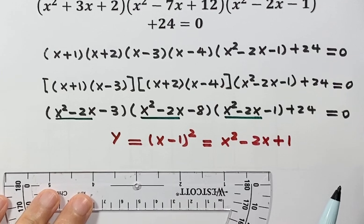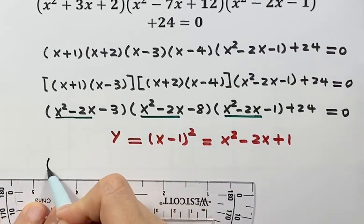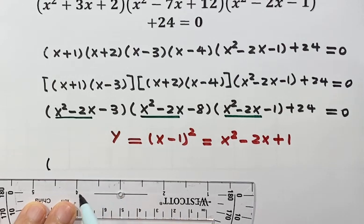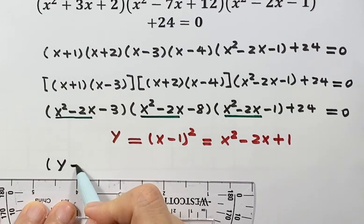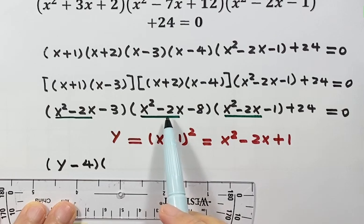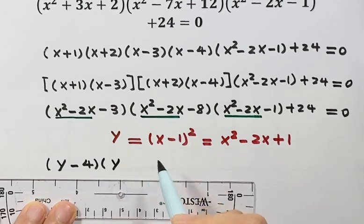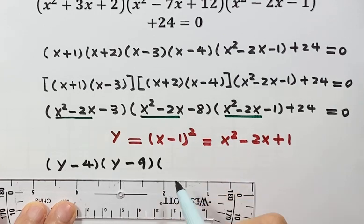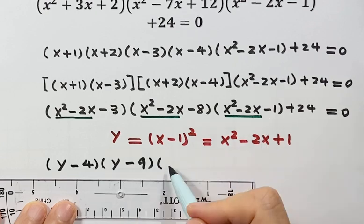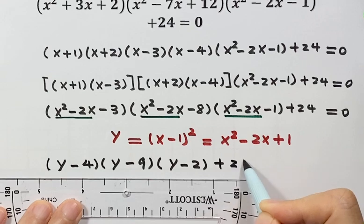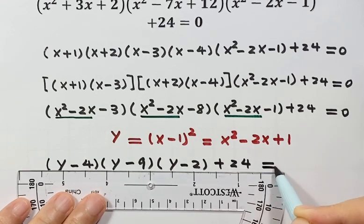Looking at the first factor: x squared minus 2x plus 1 equals y, then minus 1 minus 3 gives minus 4. For the second one: x squared minus 2x plus 1 equals y, then minus 1 minus 8 gives minus 9. And for the last one, here we have y minus 2, then plus 24.